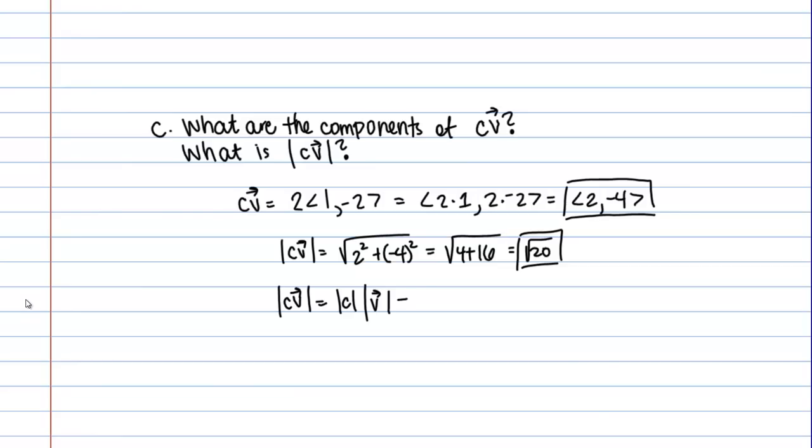All this is saying, if we apply our C, our C was 2, and the absolute value of 2 is just 2. All this is saying is that the magnitude of the new vector, CV, should just be 2 times the magnitude of V, which makes sense geometrically. Let's just really quickly look at this on a graph.